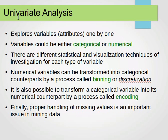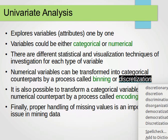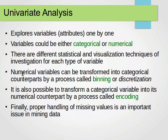In univariate analysis, as the prefix 'uni' suggests, we explore variables or attributes one by one. Variables can be either categorical or numerical, so we have two types. We have different statistical and visualization techniques for investigating each type — different techniques for categorical variables and different techniques for numerical variables.